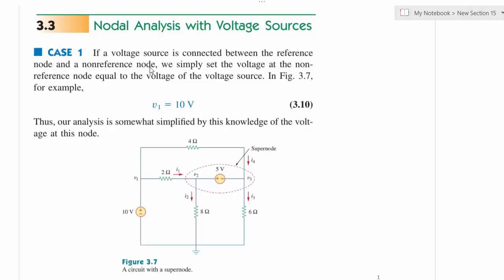The issue is that if we have a voltage source between two nodes, we don't know the current through it. We can write V1 minus V2 over 2 is I1 and V2 minus 0 over 8 is I2, but we don't know the current in the voltage source branch. We cannot find that current in the beginning.